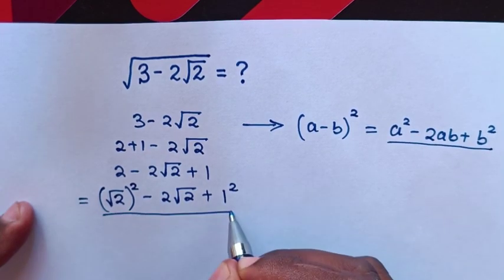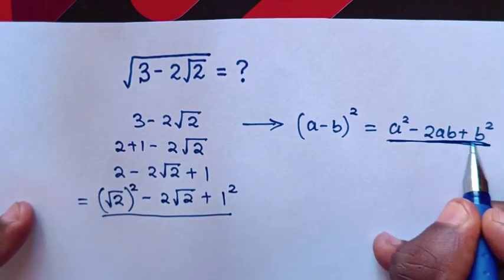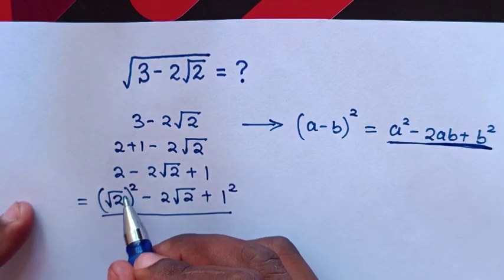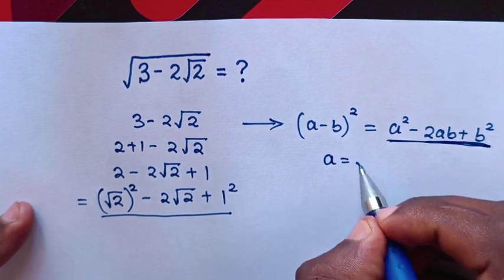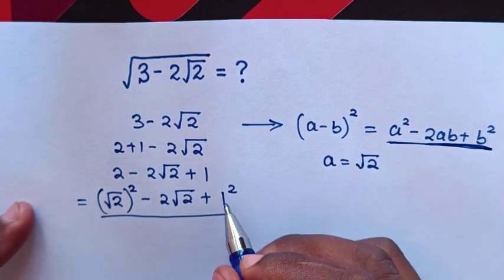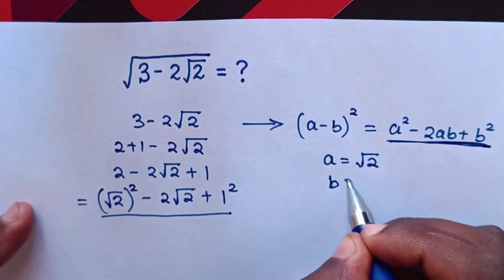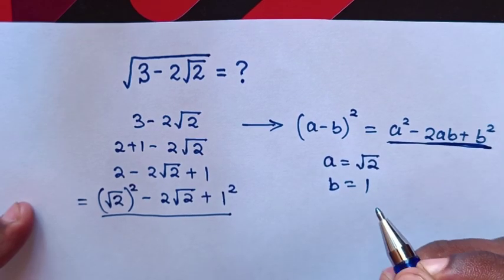When you compare this expression and from this rule, in here square root of 2 bracket square and a square, we come to find a is equal to square root of 2 and 1 square and b square, b is equal to 1.